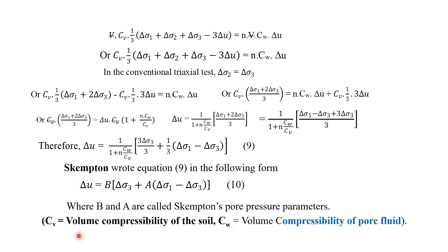To recap: CV is the volume compressibility of the soil and CW is the volume compressibility of the pore fluid.